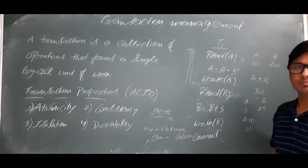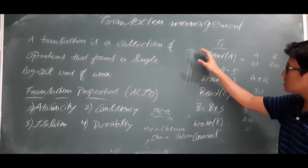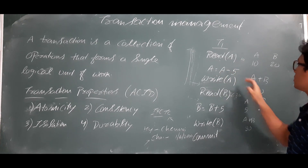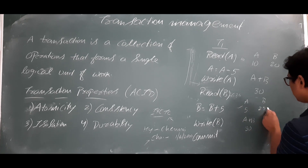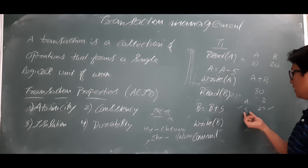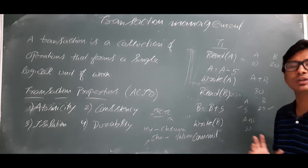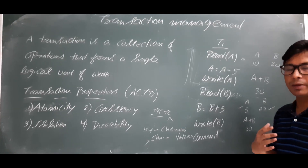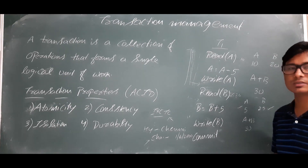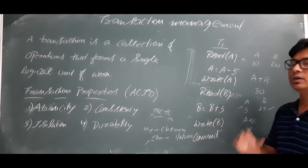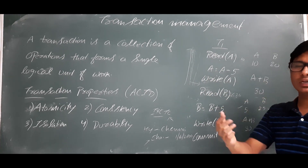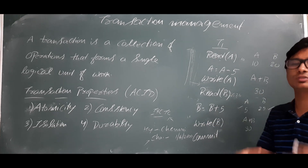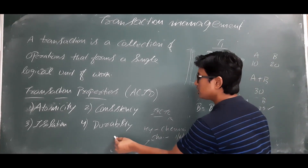After executing a transaction — for example A equals A minus 5 so A becomes 5, and B becomes 25 — and after performing the commit, meaning these values are permanently stored in the database, whatever changes were done to the database should be persistent even if system failures occur in the future. That is what durability means.